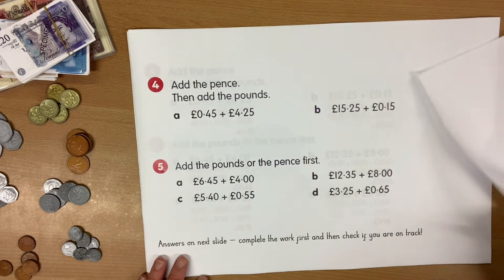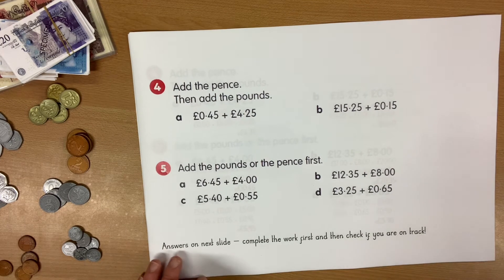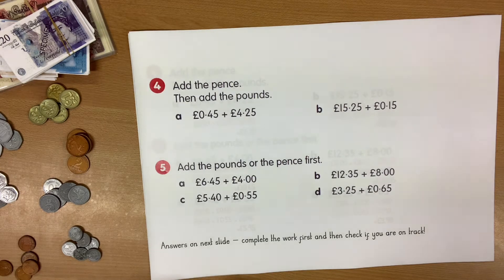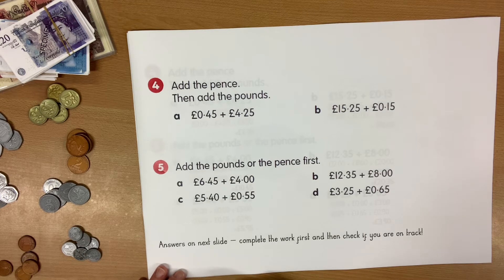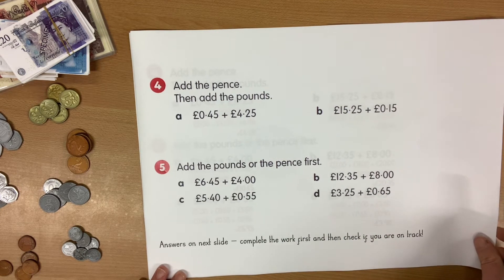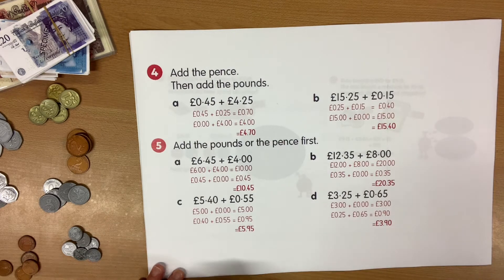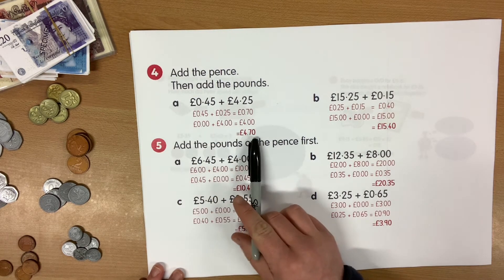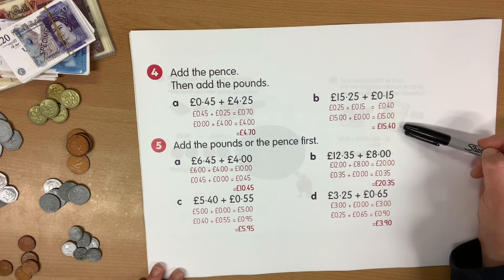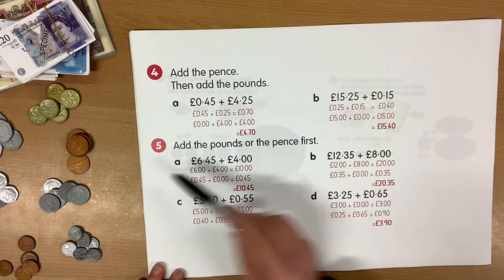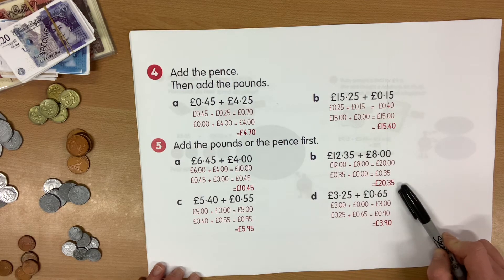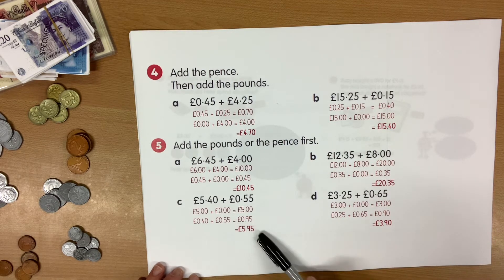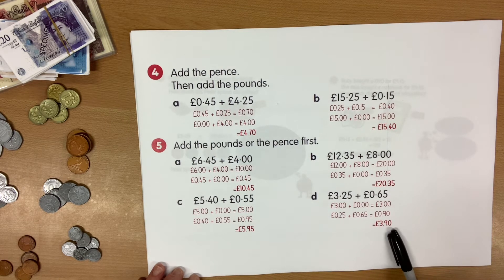This then moves on to questions four and five. Question four asks you to add the pence then add the pounds. Question five asks you to add the pounds or the pence first — you get to choose for that one. Why not pause and give it a go before I go through the answers? The answers are: question four A was £4.70, question four B was £15.40. Question five A was £10.45, B was £20.35, C was £5.95, and D was £3.90.